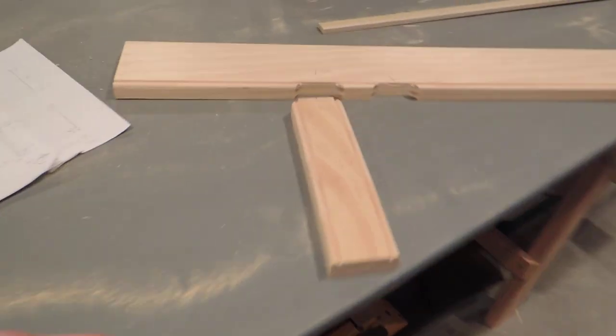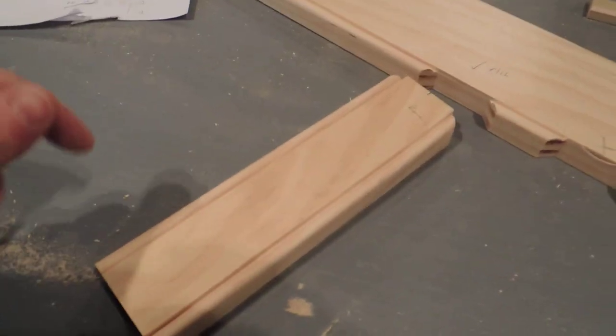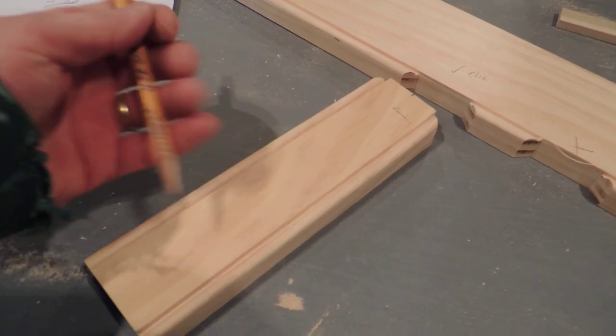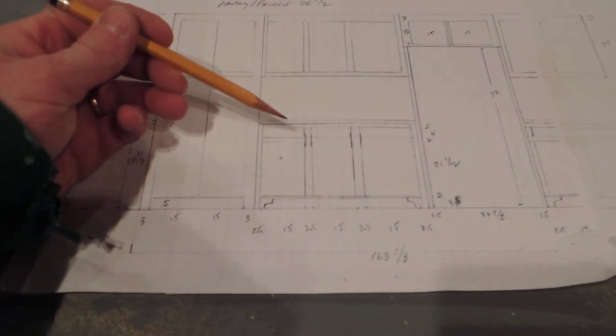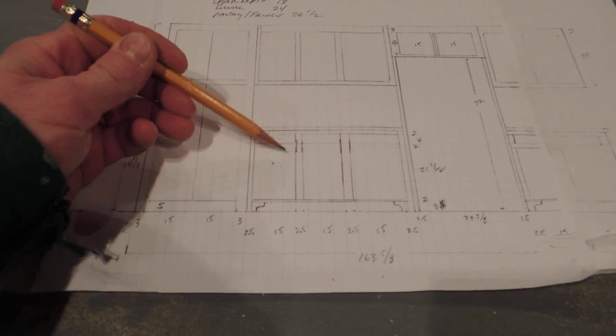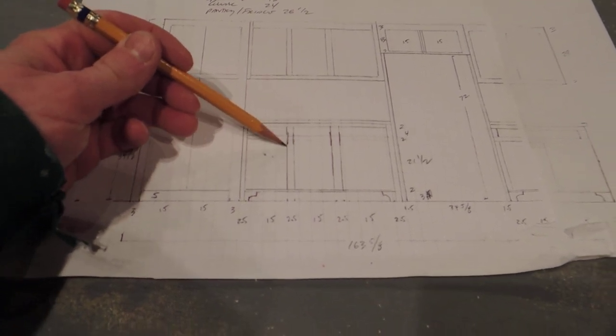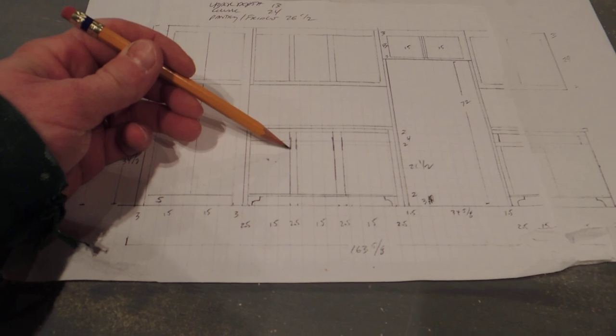And one thing I want to do on the edges of that face frame is to apply this bead detail, which is again a traditional detail that you see. So anywhere where there's a drawer or a door, and these drawers and doors are going to be inset, then this edge will have that bead detail.